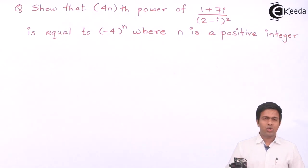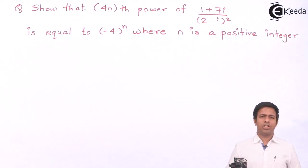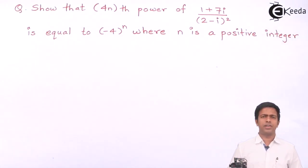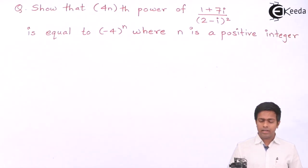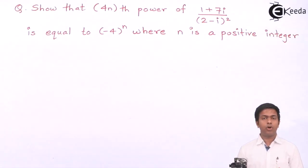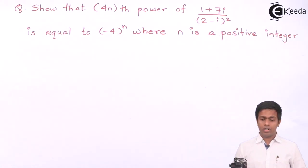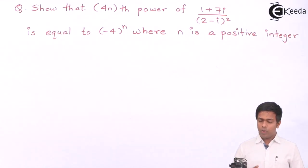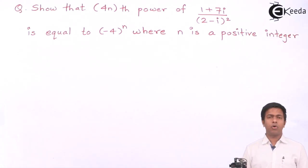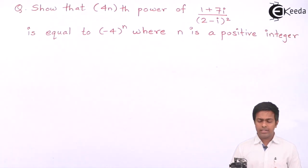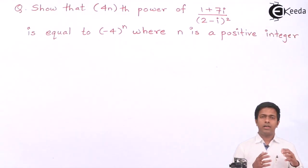Today we are going to solve a problem based on De Moivre's theorem. We have to show that the 4nth power of (1 + 7i) / (2 - i), the whole square, is equal to minus 4 raised to n, where n is a positive integer.